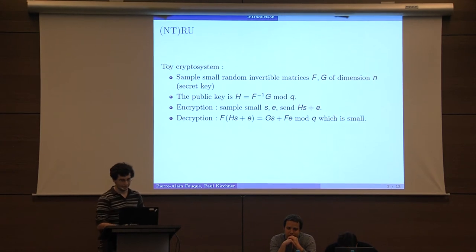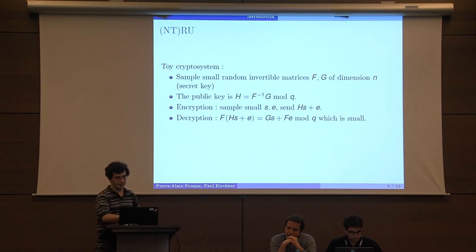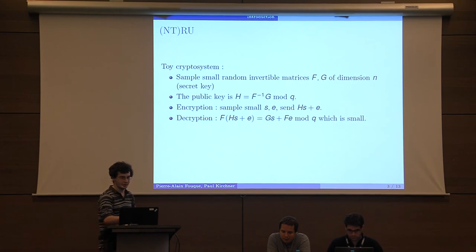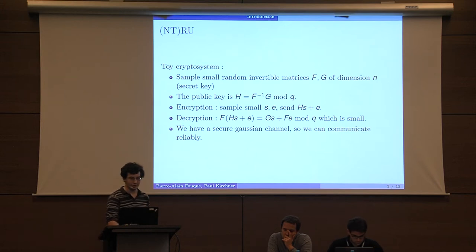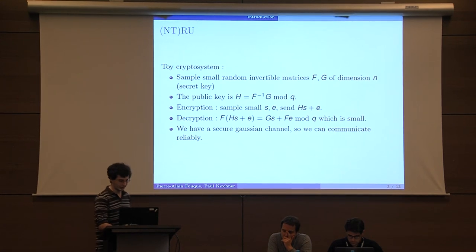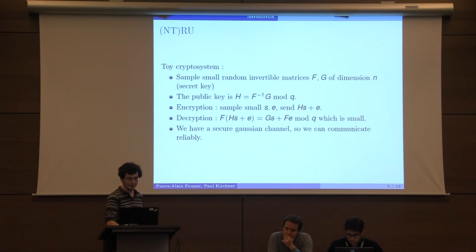If you want to decrypt, you multiply on the left by F, and due to the definition of H, this is equal to G times s plus F times e. You can see that since G and s are small matrices and vectors, and the same for F and e, then this is small. In this way we have a secure motion such channel, and therefore we can communicate reliably. Now a few details here that I will hide because they don't matter for the rest of the talk.